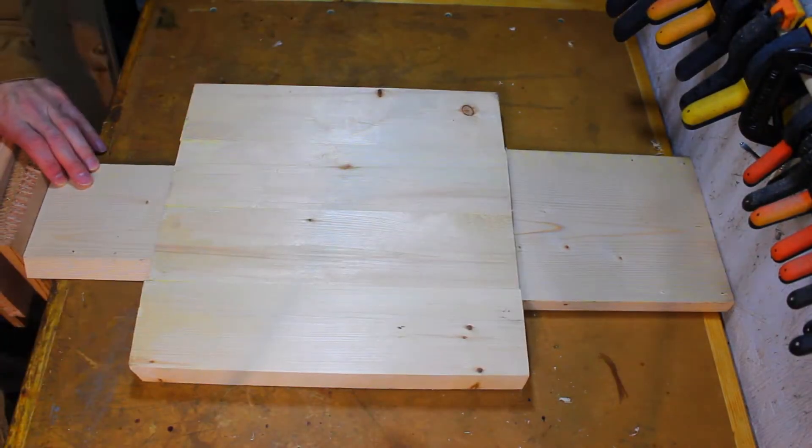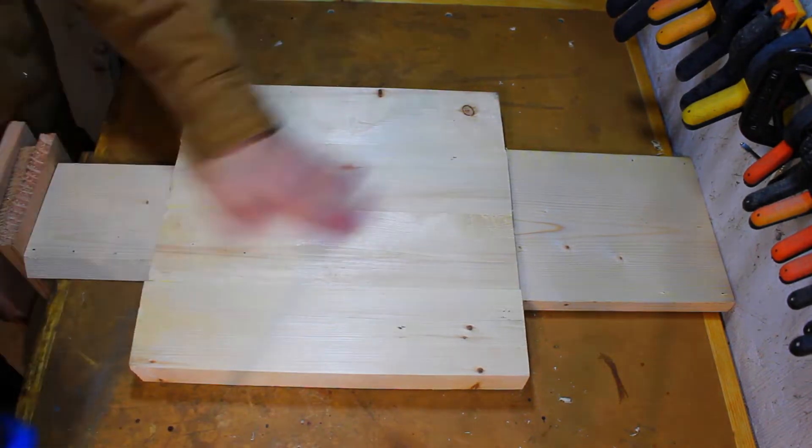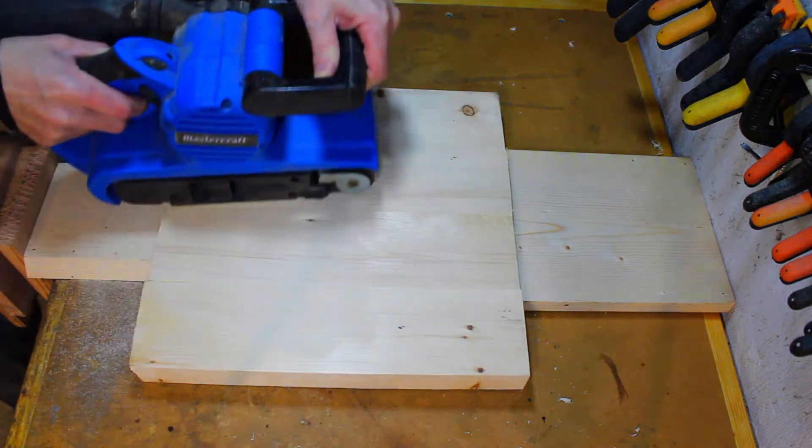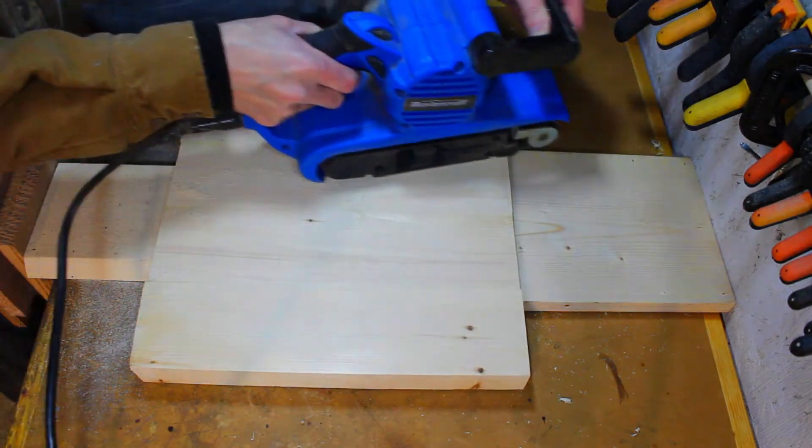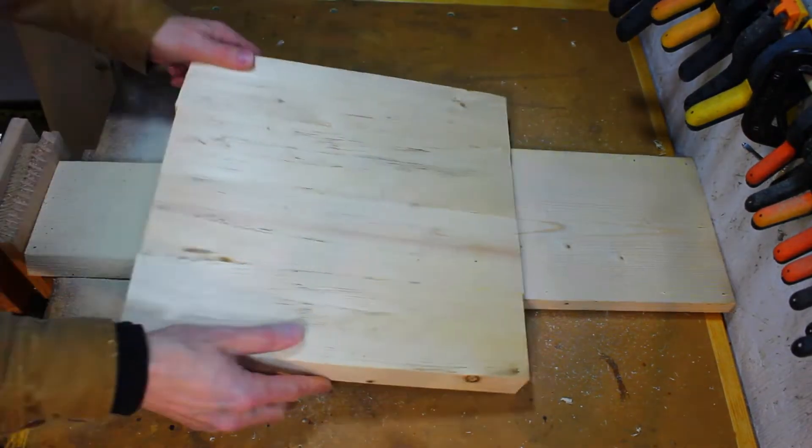With both sides complete, it is time to sand down all the planing marks. After securing the board to my workbench, I'll use my belt sander. Be careful not to stay too long in any one place when using a belt sander. They can remove large amounts of material very quickly. Keep the sander moving around the project at all times.